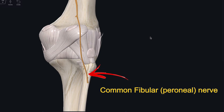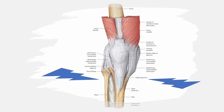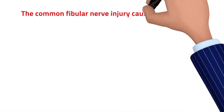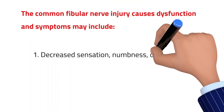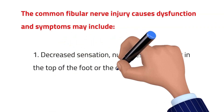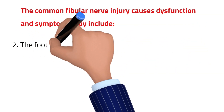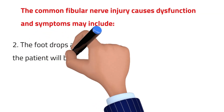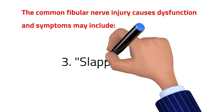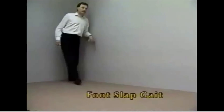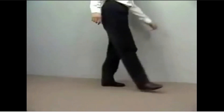The common fibular nerve is exposed to direct trauma and is involved in fractures of the upper part of the fibula. Its injury causes dysfunction, and symptoms may include decreased sensation, numbness, or tingling in the top of the foot or the outer part of the leg. Foot drop occurs, and the patient will be unable to hold the foot up due to loss of motor function of the anterior and lateral muscles of the leg. Slapping gait describes the patient's walking pattern, in which each step makes a slapping noise.